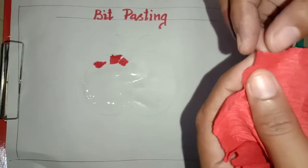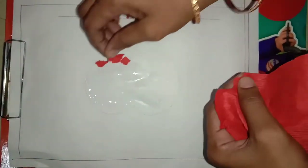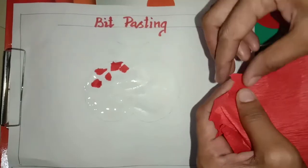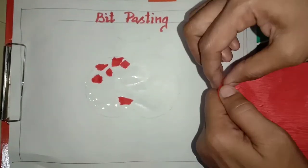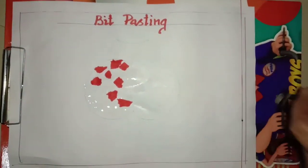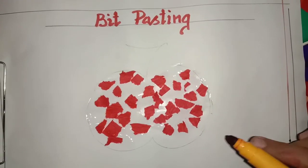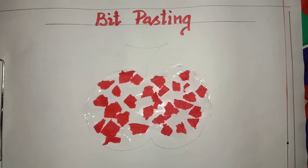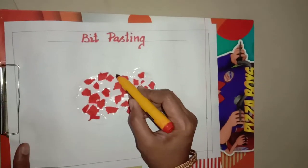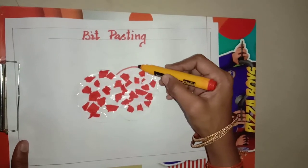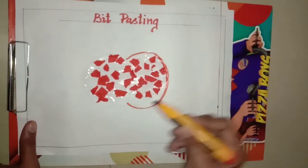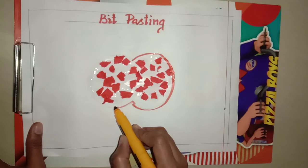See here? Can you see? See here, small small pieces. Apply the glue randomly and paste the pieces. Don't make the outline very dark. Use a pencil to draw the outline.